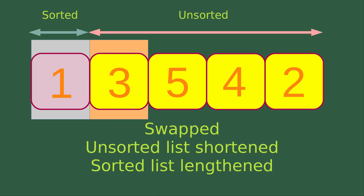Now swapping is complete. So we can see that we have a sorted number on the far left hand side of the whole list, which is element with number one. And I would have four numbers remaining unsorted. So in this case, the unsorted list will be shortened and the sorted list will be lengthened.